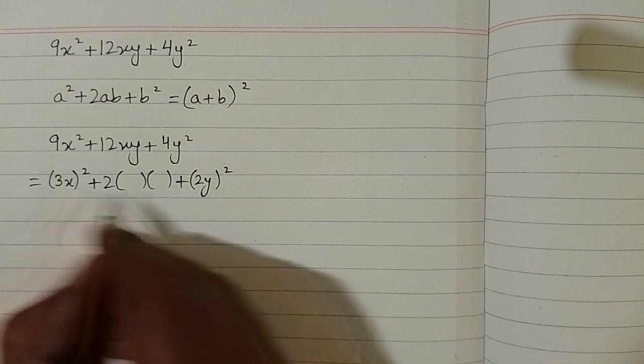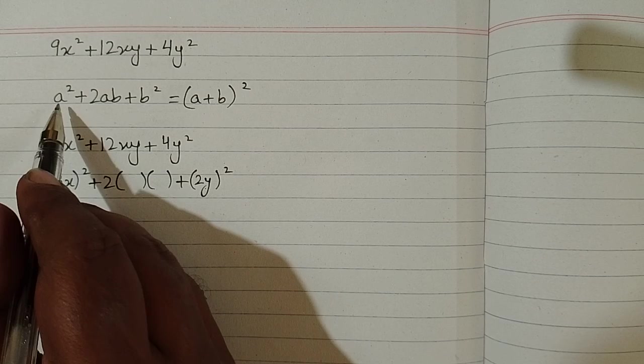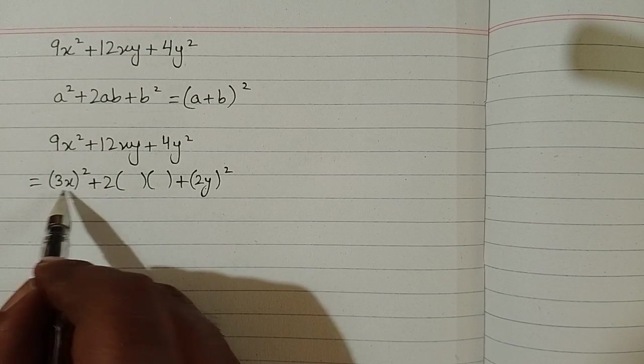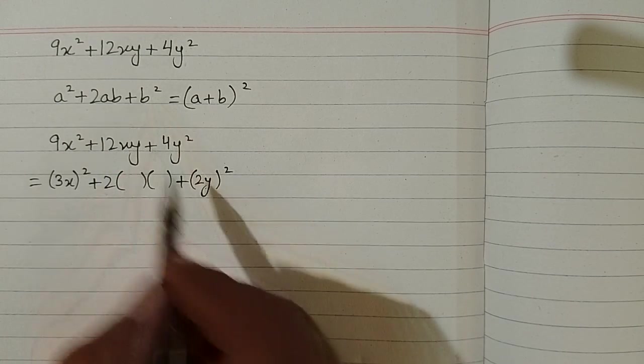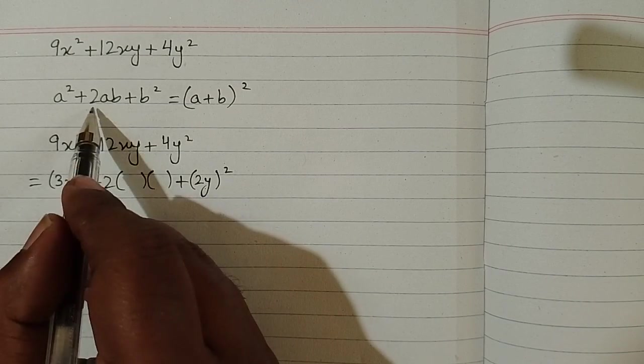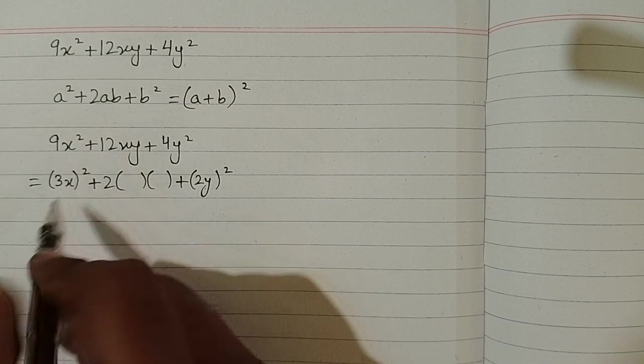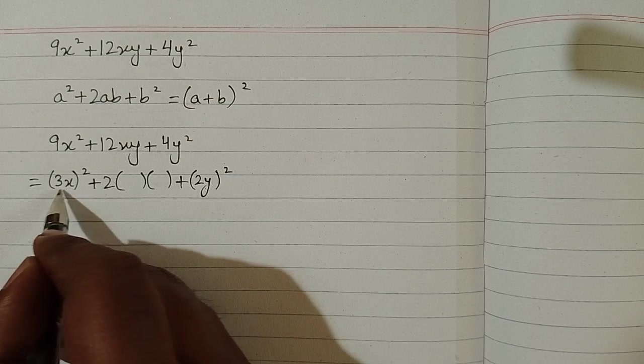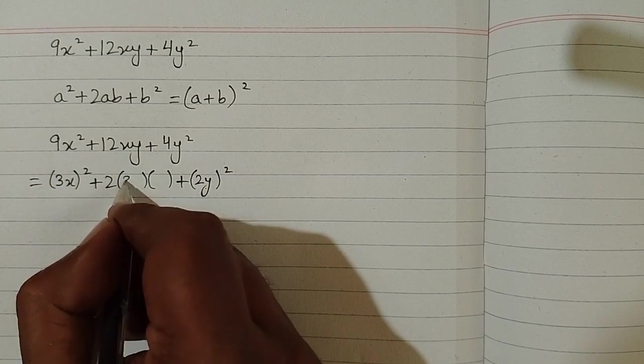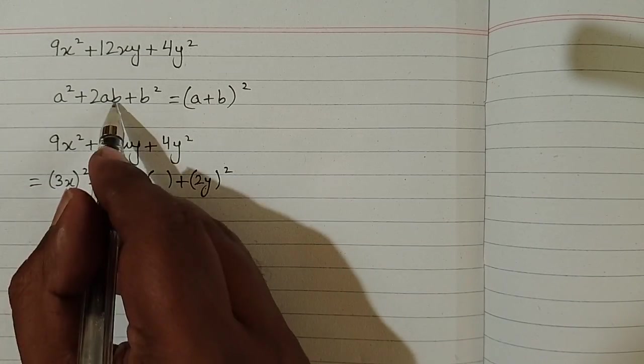So we have a and b because we have a square is equal to 3x the whole square and b square is equal to 2y the whole square. And in the middle term we have 2ab. So we can put 3x in place of this a and 2y in place of b.